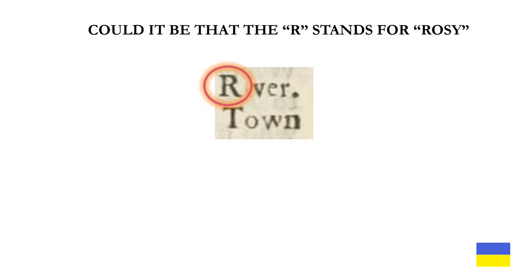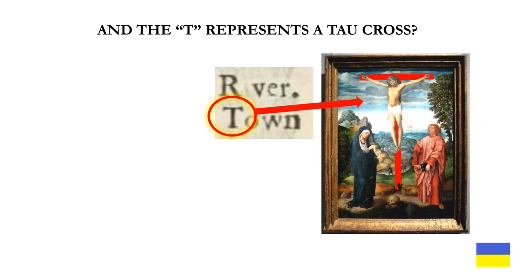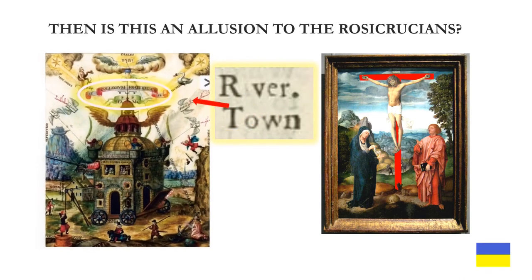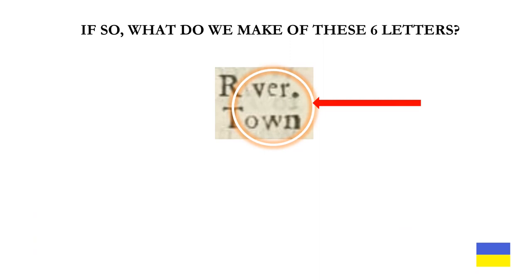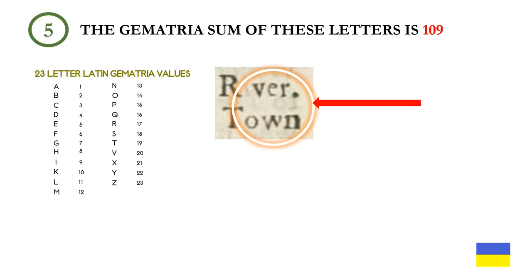Could it be that the R stands for rosy? And the T represents a Tau cross, as in this 15th-century crucifixion painting. Then is this an allusion to the Rosicrucians — the R and T? If so, what do we make of these six letters to the right of the R and the T? The gematria sum of these letters is 109. In this case, we keep the lowercase v intact.